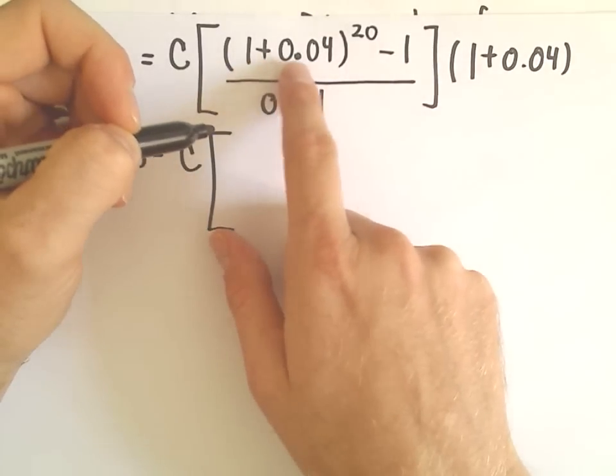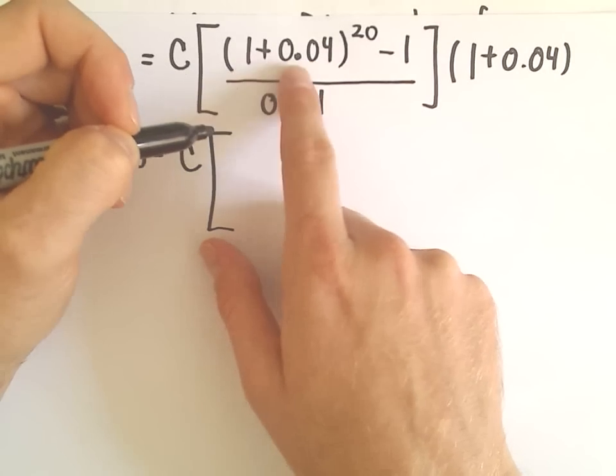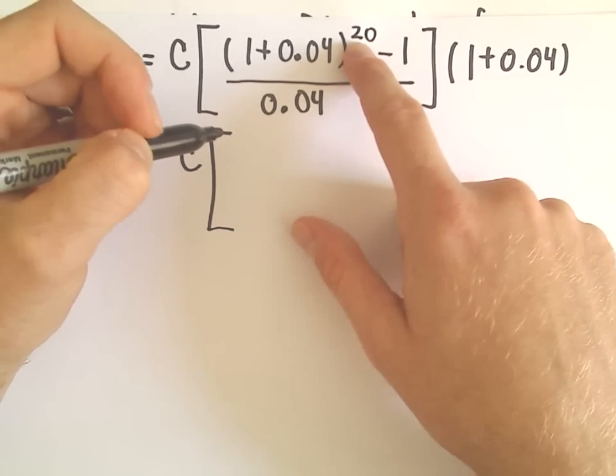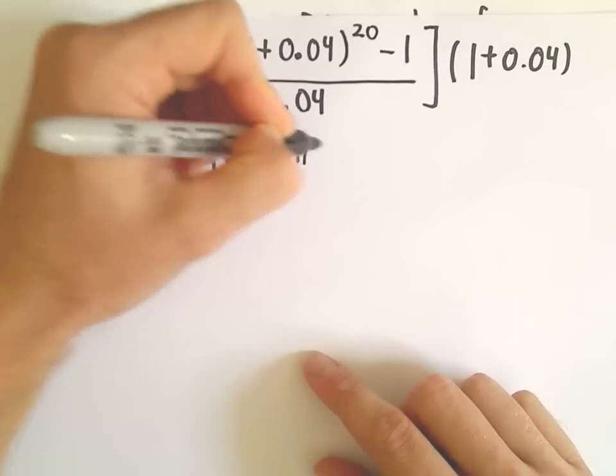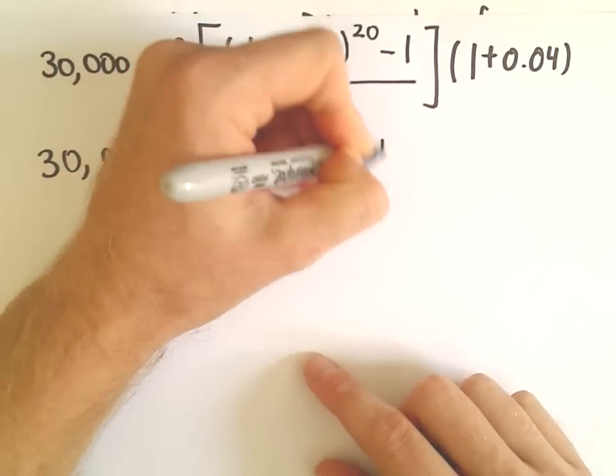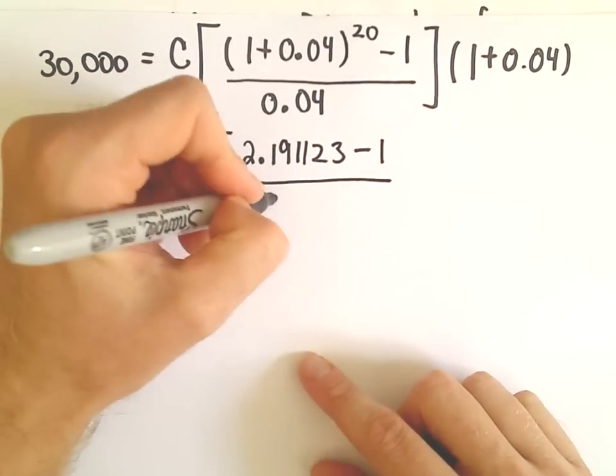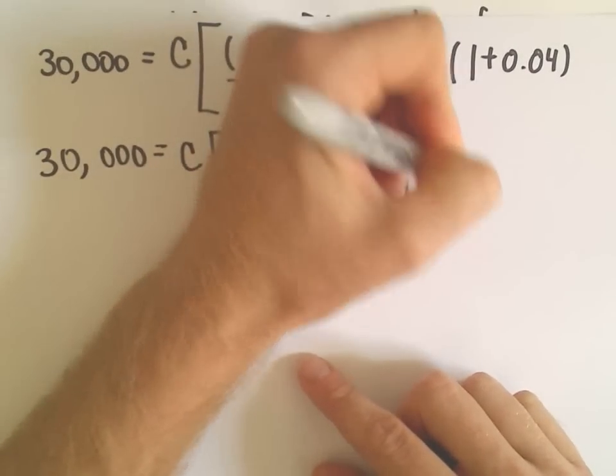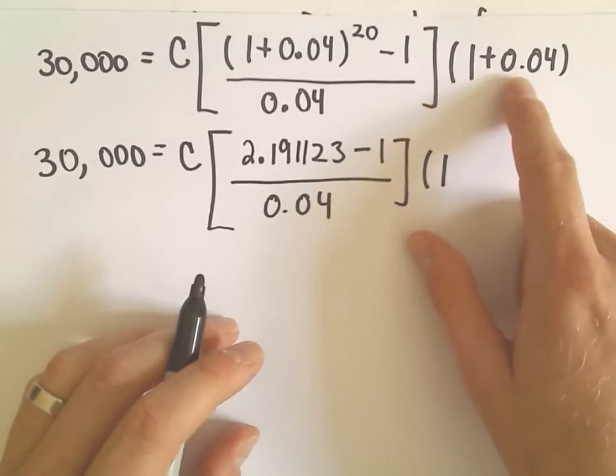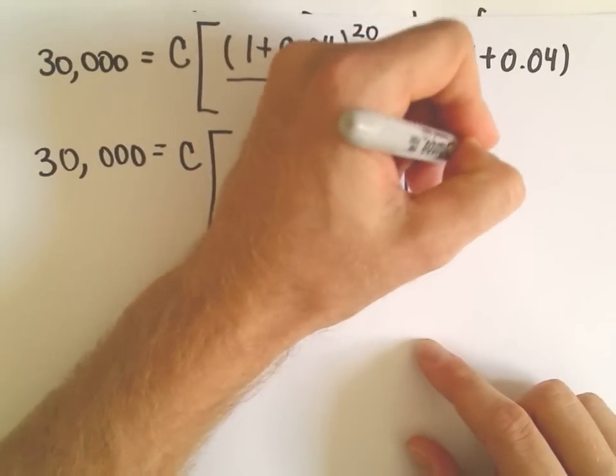So 1 plus 0.04, well, that's just 1.04. And when I raise that to the 20th power, I'm getting 2.191123. I've got to subtract away our 1, divided by 0.04. And 1 plus 0.04 is just going to be 1.04.